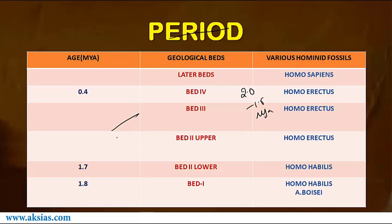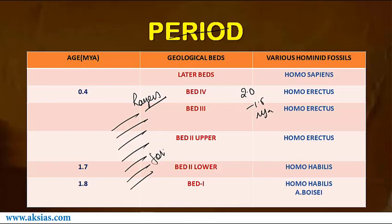This is based on the stratigraphy of Olduvai Gorge. The earth is made up of numerous layers, and in these layers we find fossils of different species. Around 1.8 million years ago in Bed 1, fossils of both Homo habilis and Australopithecus boisei are found. That is the reason they are called contemporaries.